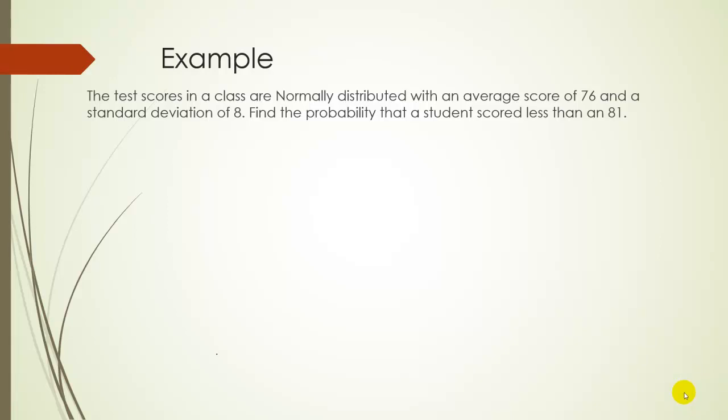So just drawing out what's been said, we know the x's are supposed to follow a normal distribution, so let's draw a normal distribution. And since these are x values, let's label this with an x. We know the average score is supposed to be a 76, and maybe just for reference, let's write down what the standard deviation is as well. So we know the average is 76 and the standard deviation is 8.